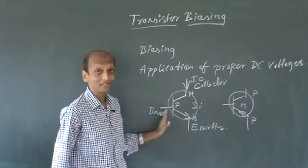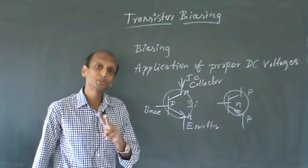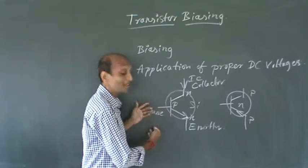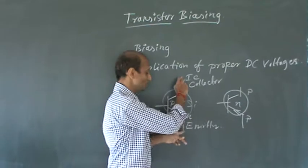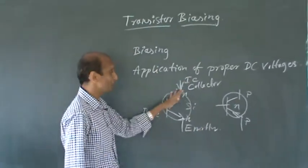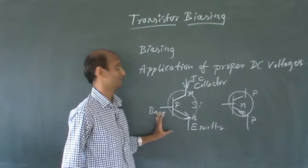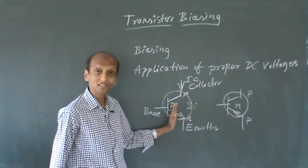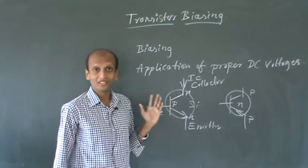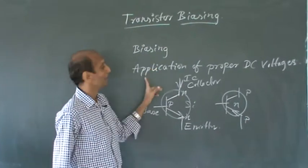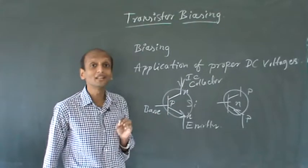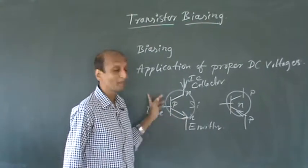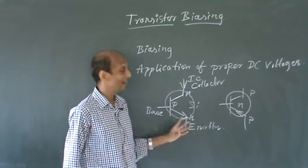A transistor has three terminals, so we need at least two bias voltages: one across the base-to-emitter terminals and the other across the output side, that is collector-to-emitter. Proper application of bias voltages across the base-emitter and collector-emitter terminals is very important to make your transistor work as you want.